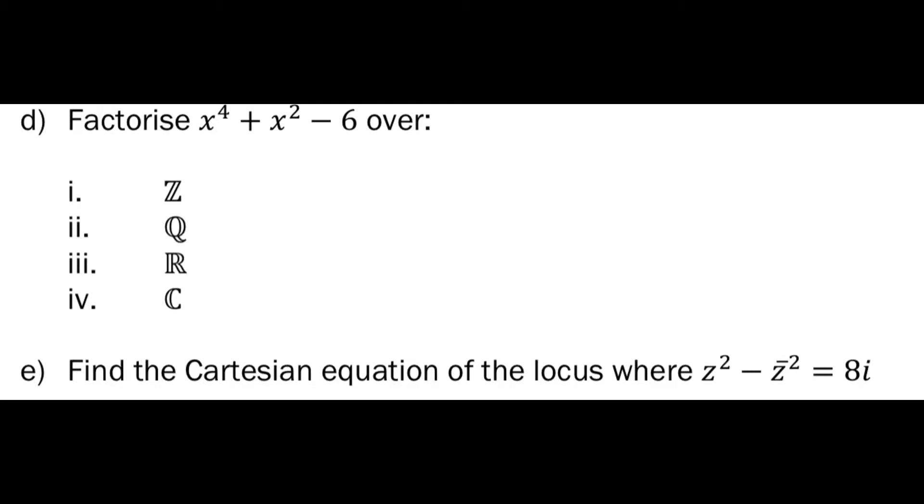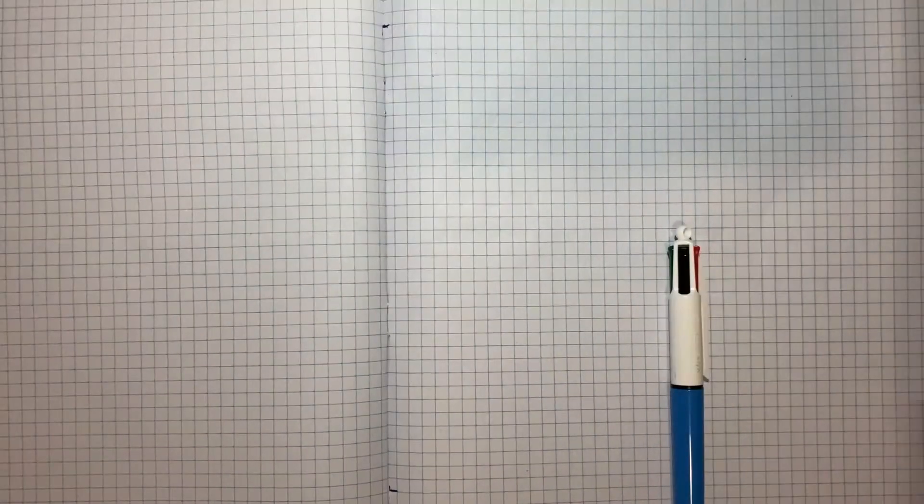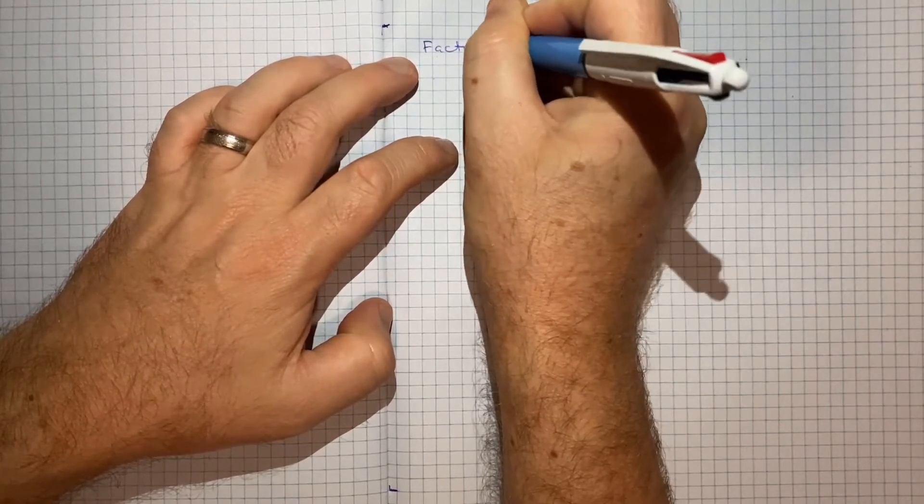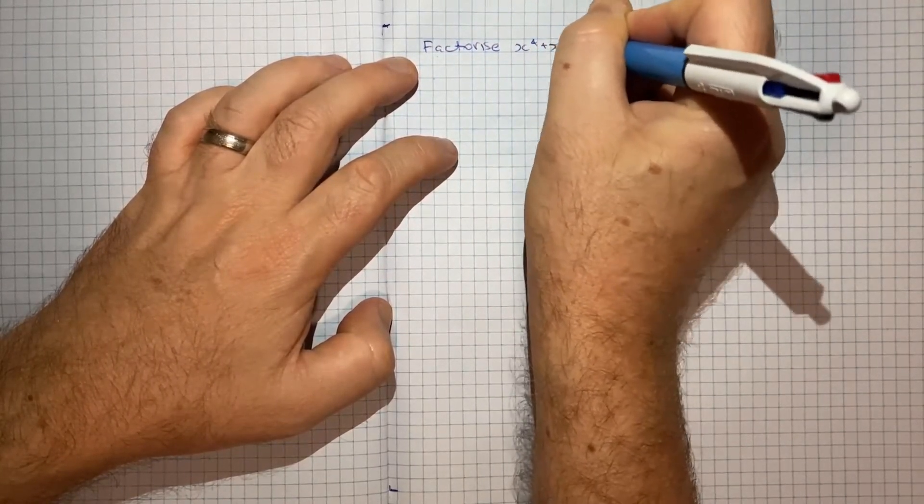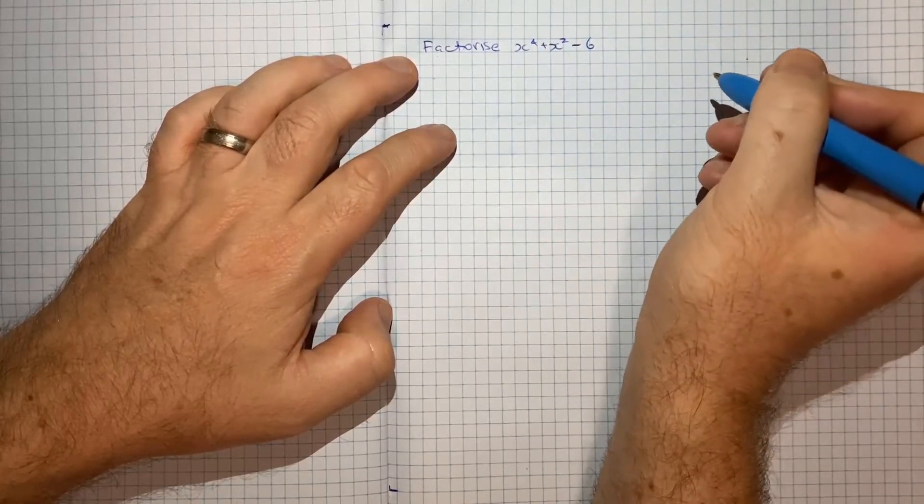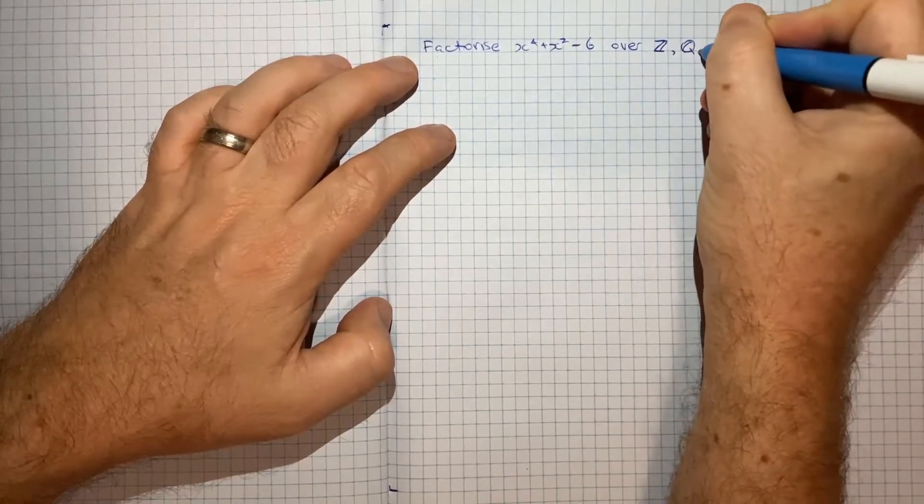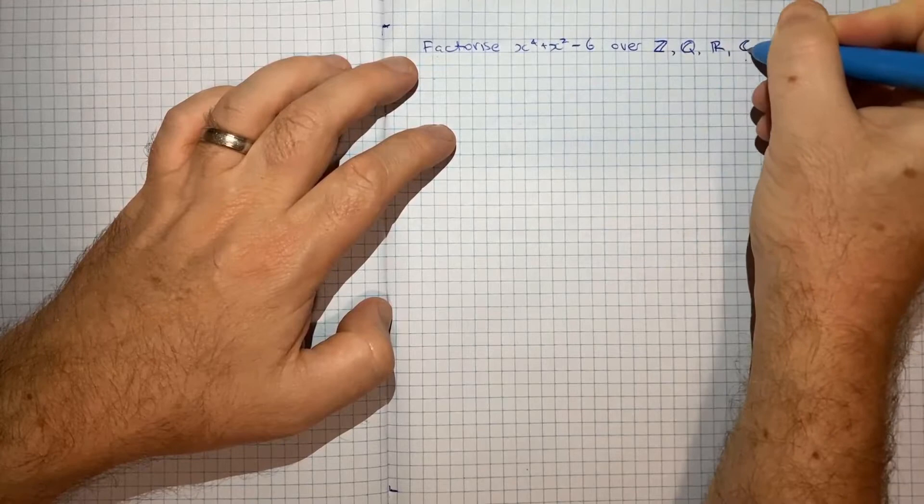which says to factorise x to the 4 plus x squared minus 6 over these set notations here. So we've got Z, which covers the integers, Q, which covers rational numbers, R, which covers real numbers, and C, which covers complex numbers.